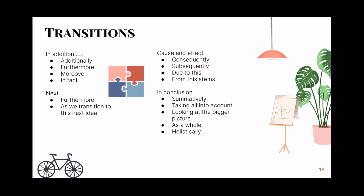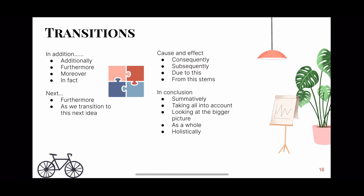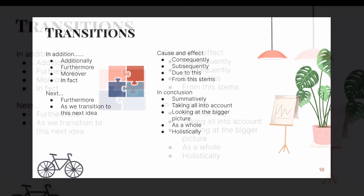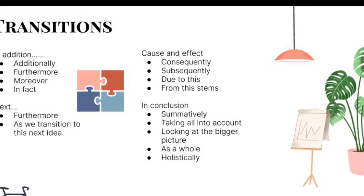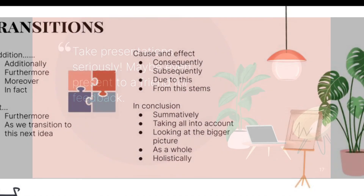Another thing to keep in mind while writing your presentation or speech is to use transition words. Transition words are basically just words that help you transition between ideas, and they can be really useful to help your audience understand the logical flow of your ideas and the relation between them. Some examples of different transitions include when you're adding new information, transitioning to a new idea, describing a cause and effect, or describing a summary. All of your ideas should fit together like pieces of a puzzle, and transition words can really help you do this.